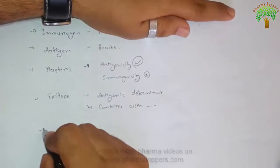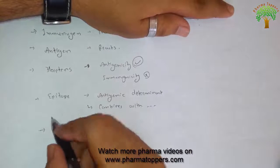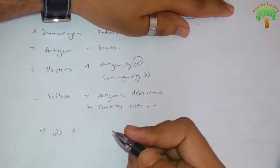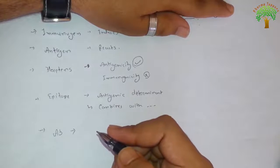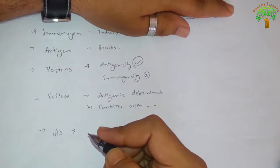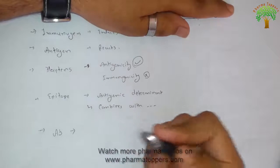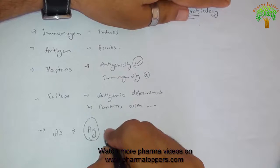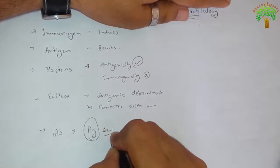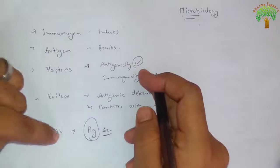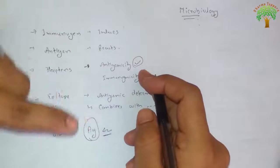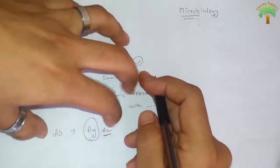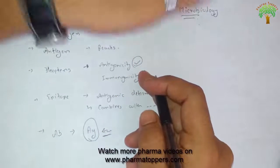This covers antigen and immunogen. Next is the antibody. Antibody is a specific protein produced in response to the immunogen, and it reacts with the antigen. It is produced in response to the antigen's immunogenicity and reacts with the antigen to neutralize it.